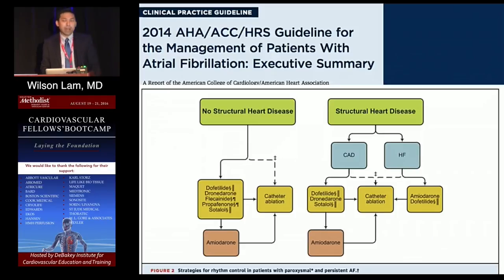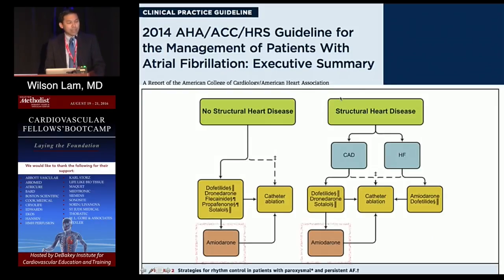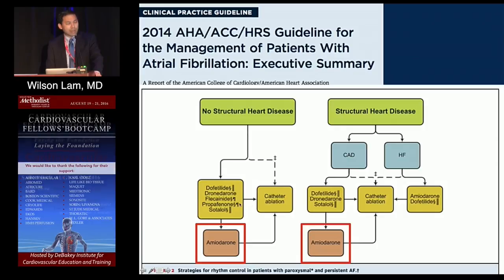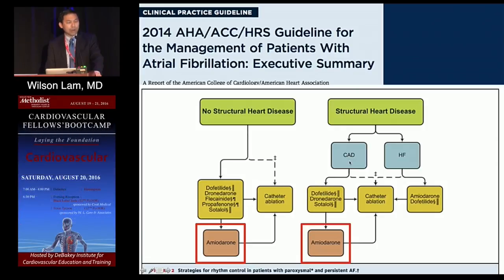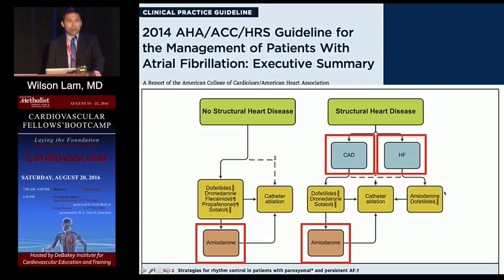Looking at the 2014 atrial fibrillation guidelines, the breakdown is no structural heart disease versus structural heart disease. Amiodarone is usually left out of first-line thinking because when we're considering amiodarone, we're often thinking about catheter ablation. The 1C agents disappear when we discuss coronary artery disease, and the class 3 light agents disappear when discussing heart failure, leaving us with the class 3 heavies: amiodarone and dofetilide.